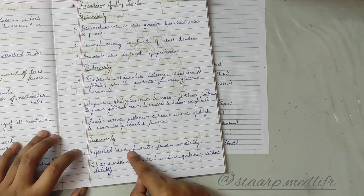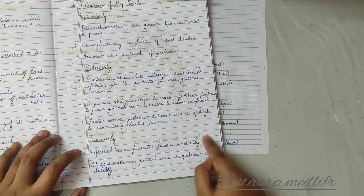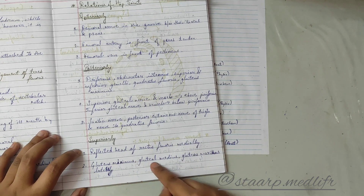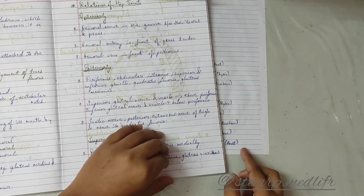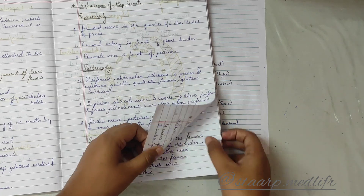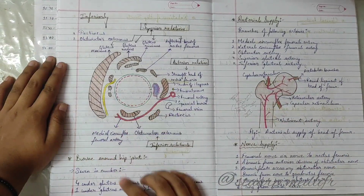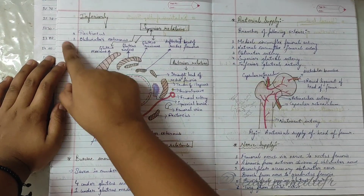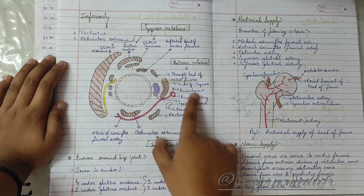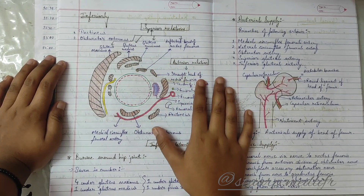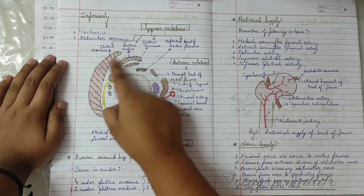Superiorly: the reflected head of rectus femoris. Medially: gluteus minimus, gluteus medius, and gluteus maximus. Inferiorly: pectineus and obturator externus. There is also a diagram of a transverse section of the muscles.